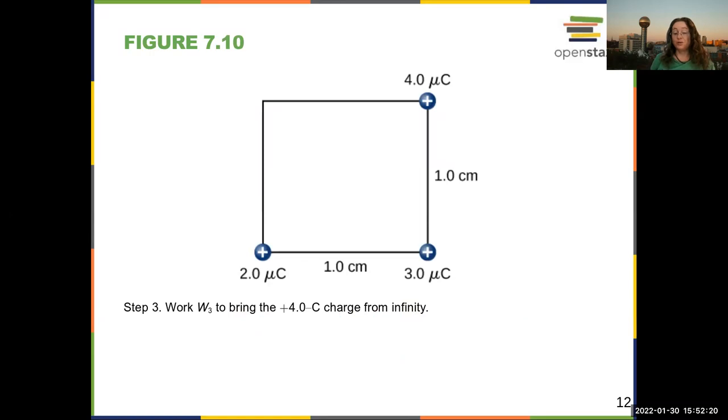All right, and now we're going to bring in charge 3 from infinity. I'm going to set this up, but I'm not going to do - well, I might go ahead and do the whole calculation. All right, now I have to do 2 potential energies. So I have K, let me not use yellow, work in step 3 is K, I'll just set this up.